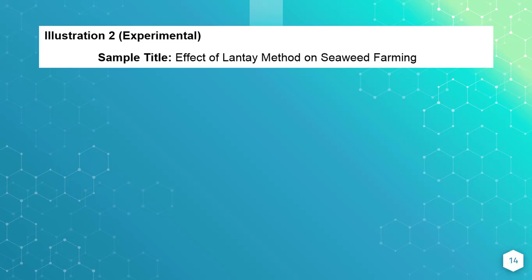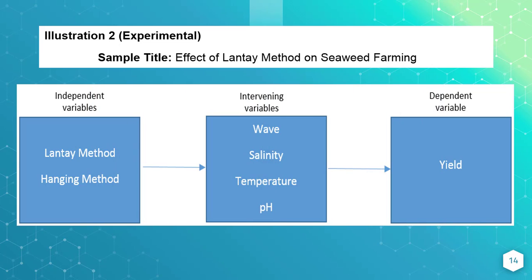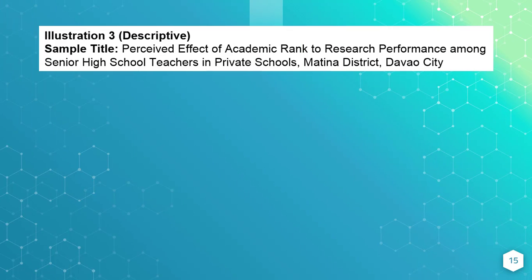Another sample of an experimental study. The title is 'Effect of Lanti Method on Seaweed Farming.' The independent variables are the traditional method of hanging the seaweeds and the method being observed — the Lanti method. These variables will affect the yield of seaweed. But intervening variables such as the force of waves, salinity, temperature, and the pH of the water may also affect the yield of seaweeds.